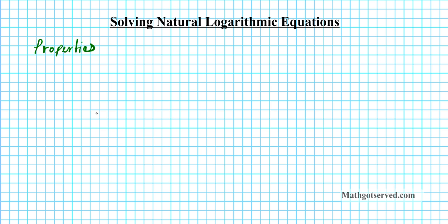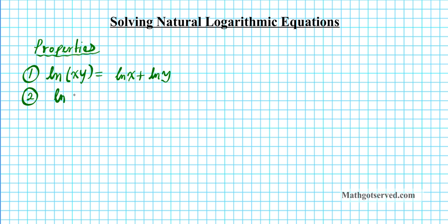Number one is the product property of natural logarithms: the natural logarithm of xy is equal to the natural logarithm of x plus the natural logarithm of y. The second property is the quotient property: the natural logarithm of x over y equals the natural logarithm of x minus the natural logarithm of y. Formula three is the exponent property: the natural logarithm of a to the x equals x times the natural logarithm of a.